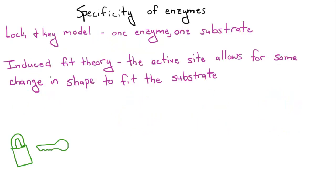Anyways, moving on to the specificity of enzymes. There are a couple of different theories on the specificity of enzymes. The first is the lock and key model. This means there's one enzyme, one substrate. It's exactly like a padlock and a key. There's only one key that opens each padlock.